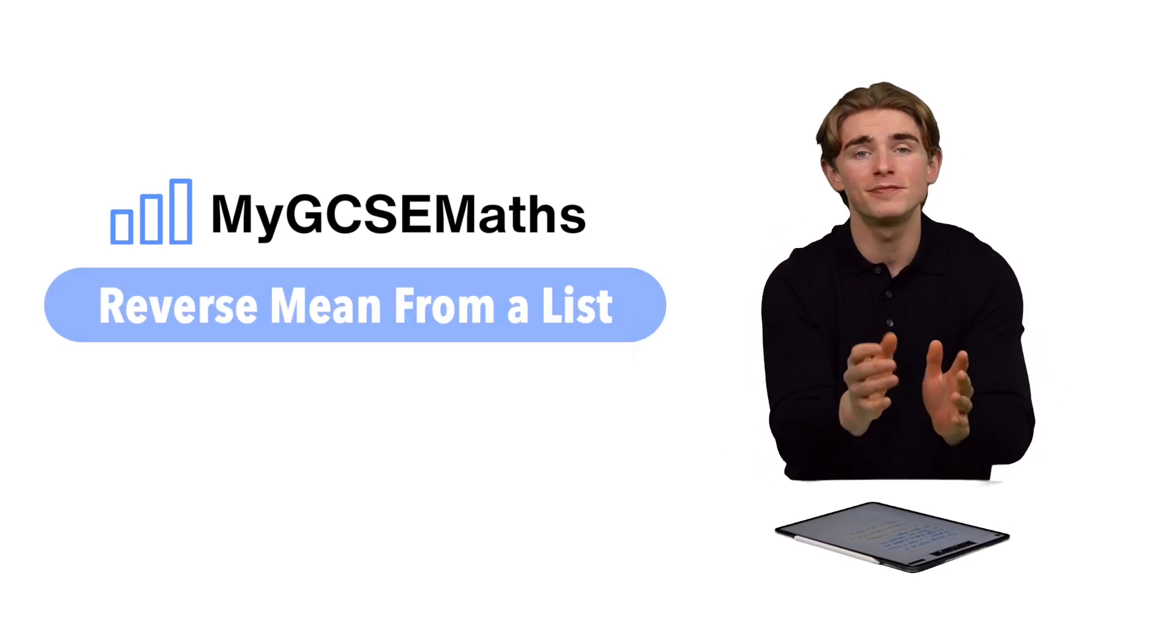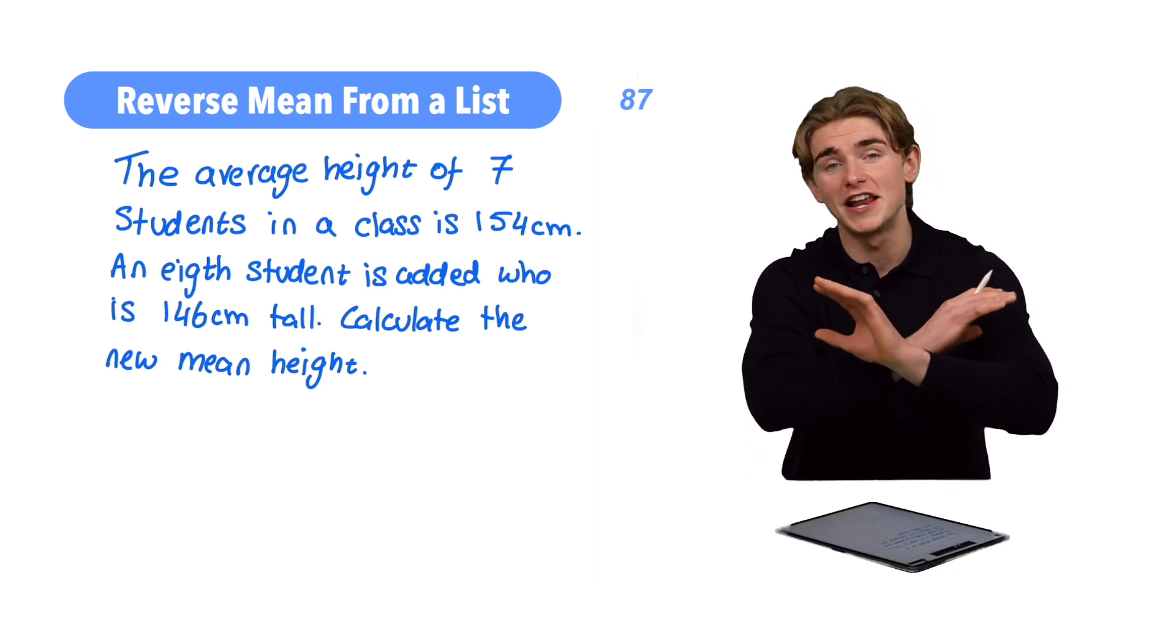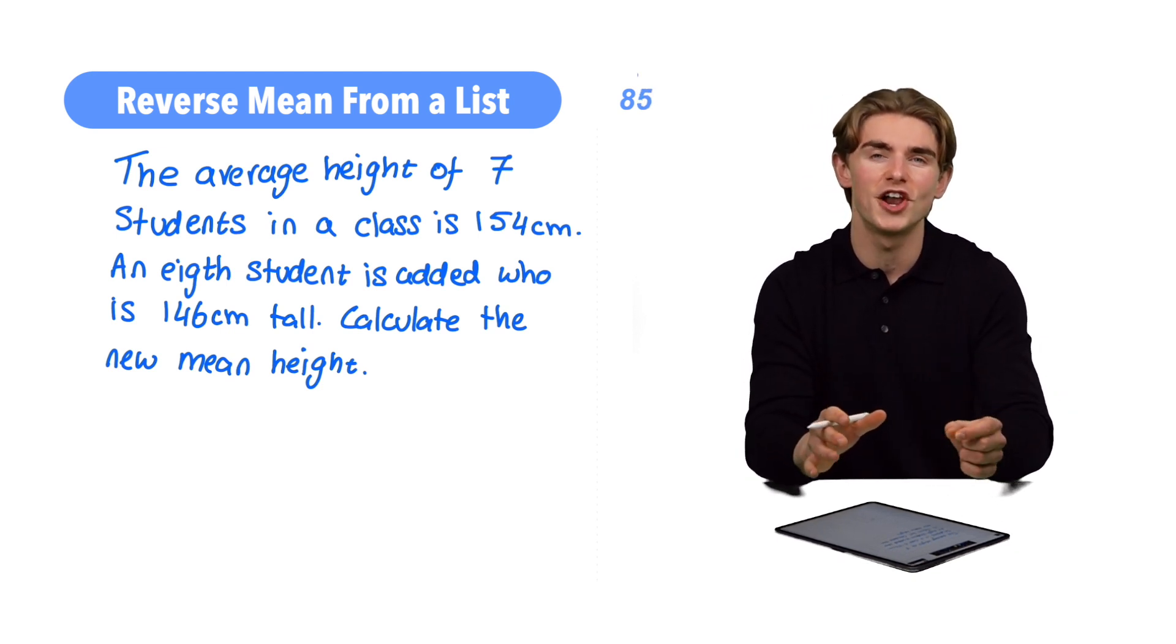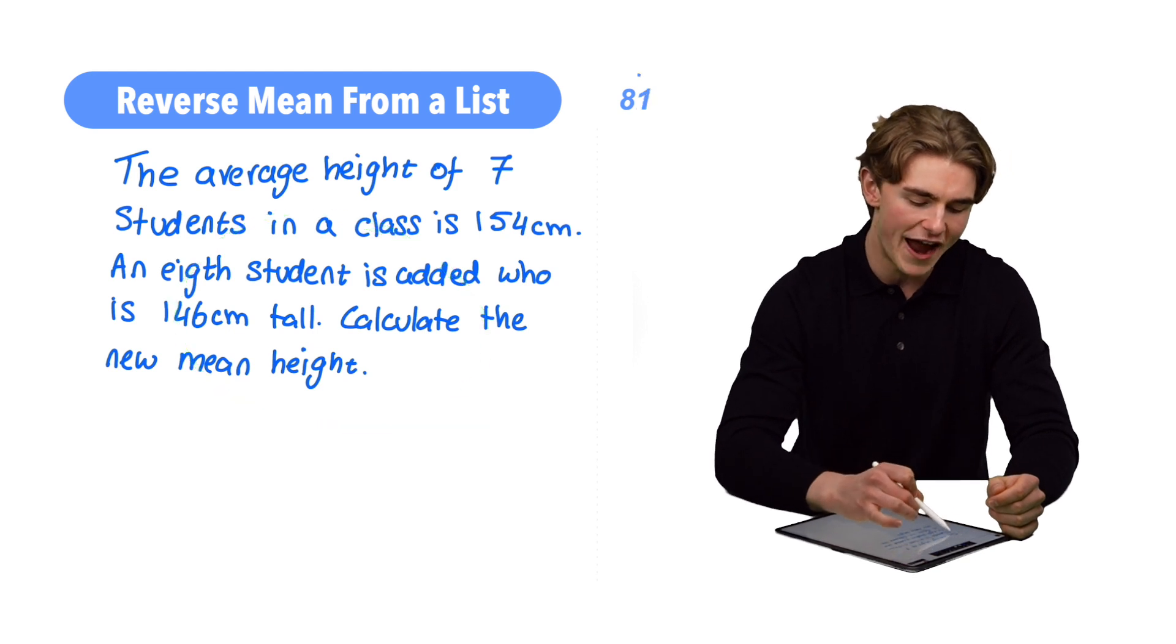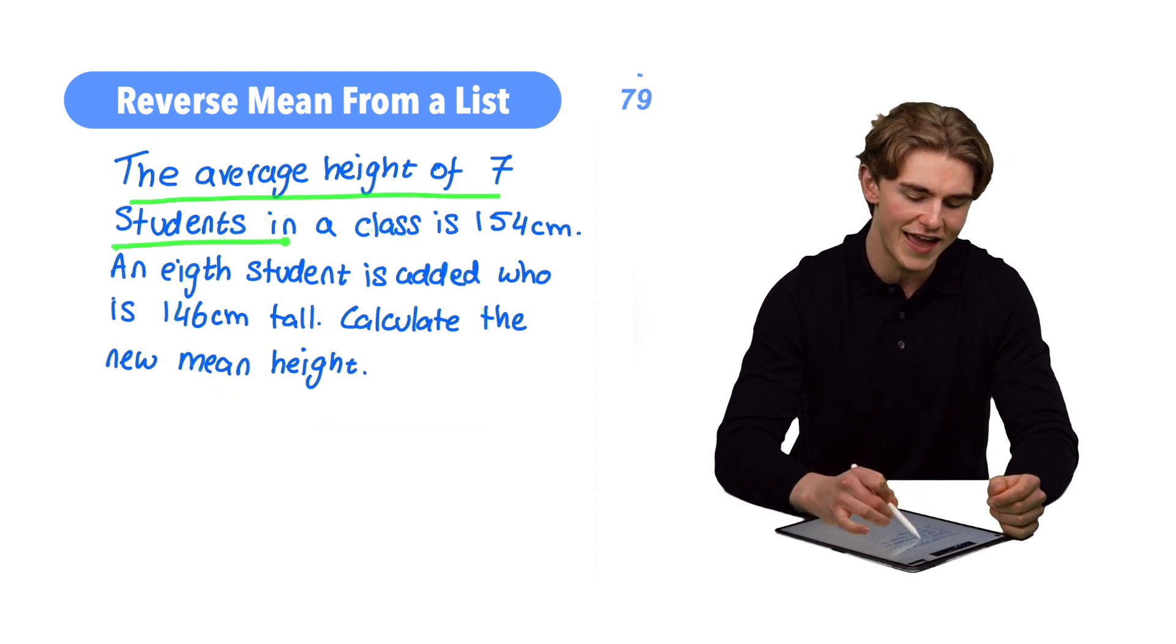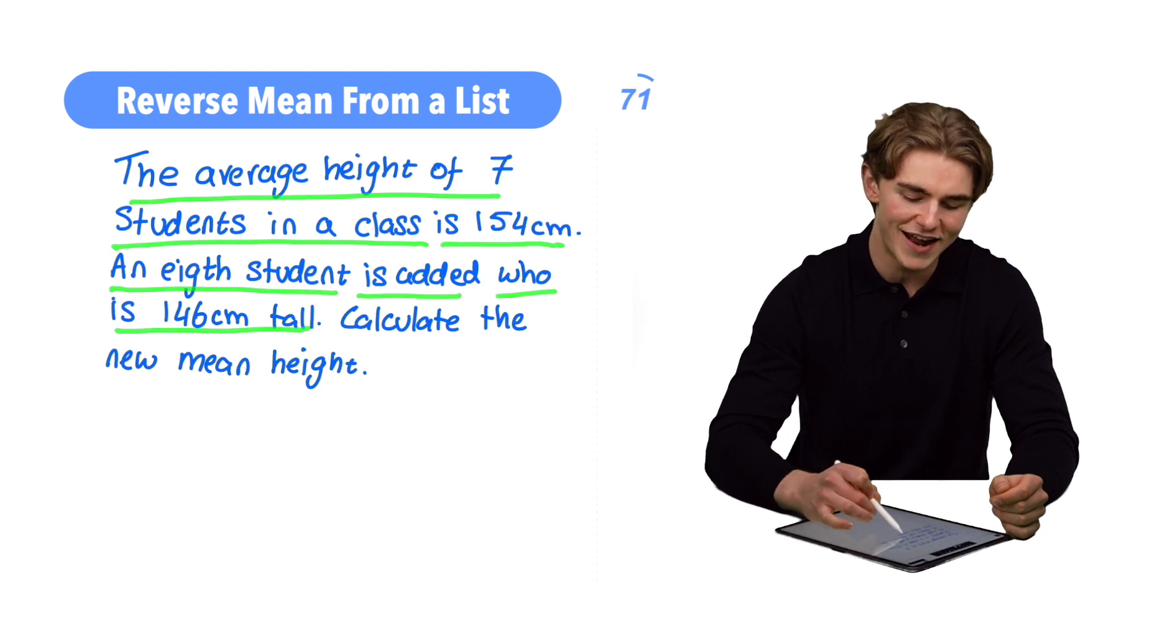How to do questions involving the reverse mean in 88 seconds. Let's go. This, guys, is a topic which a lot of people struggle with. Let's have a look and see if we can get our head around it. What are we going to have? The question says that the average height of seven students in a class is 154 centimeters. It then says that an eighth student is added to the class who is 146 centimeters tall. It then asks us to calculate the new mean height.